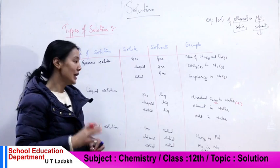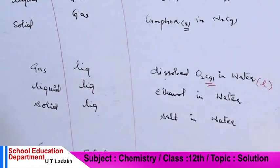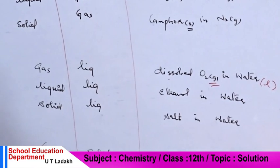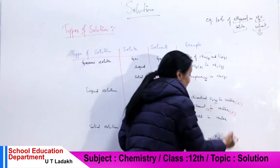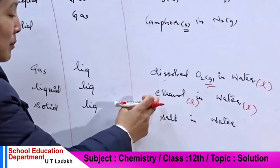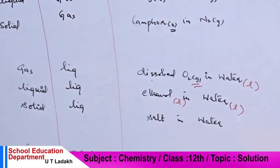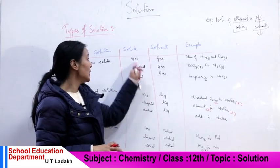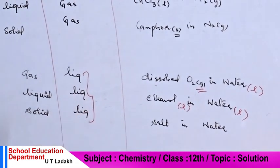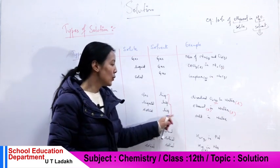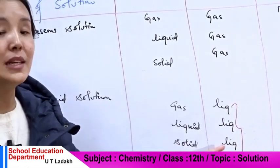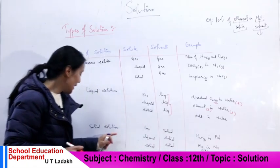For liquid in liquid solutions, both the solute and solvent are liquid. An example is ethanol in water — both are liquids. For solid in liquid solutions, examples include salt in water, sugar in water, and glucose in water.